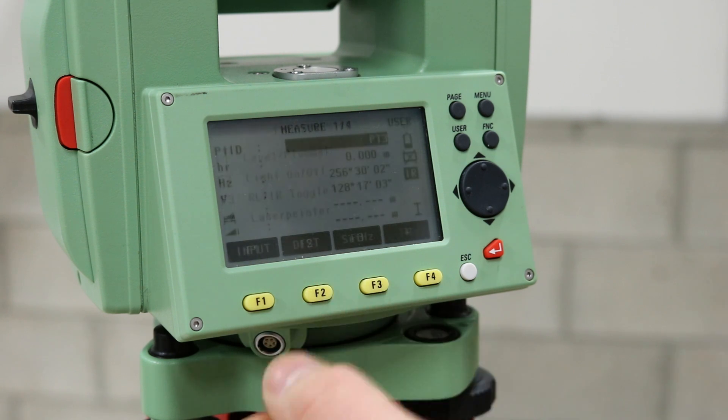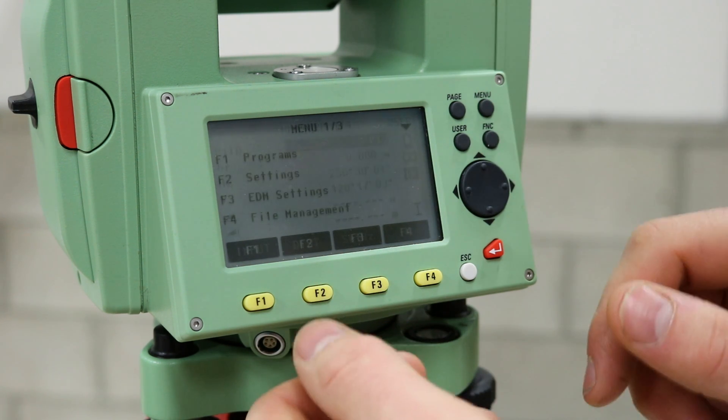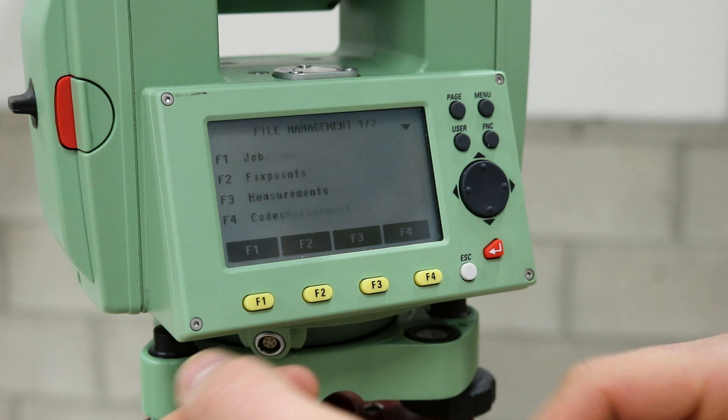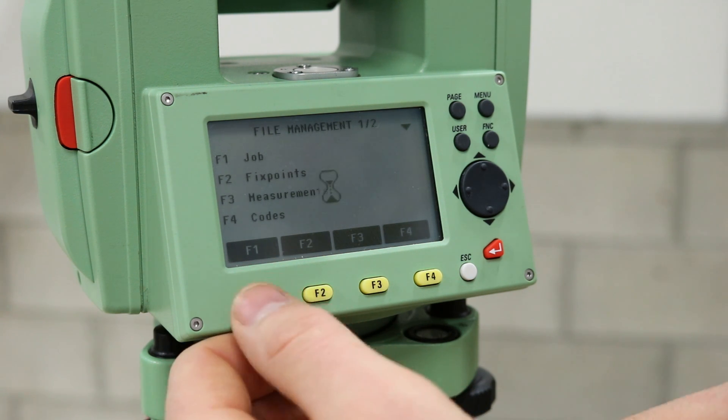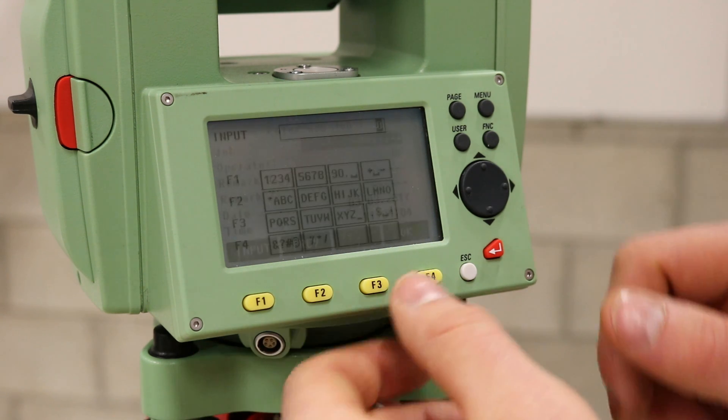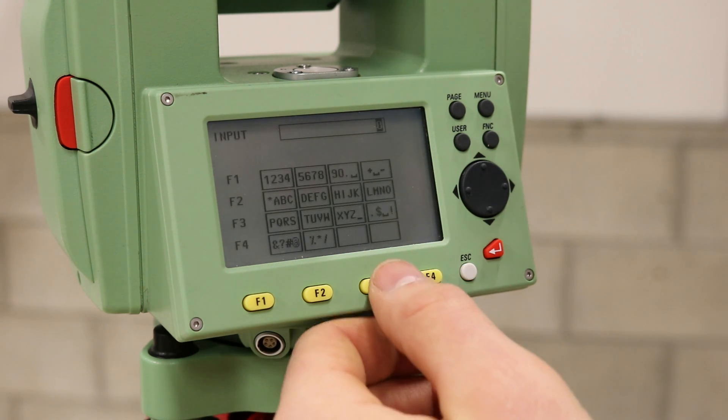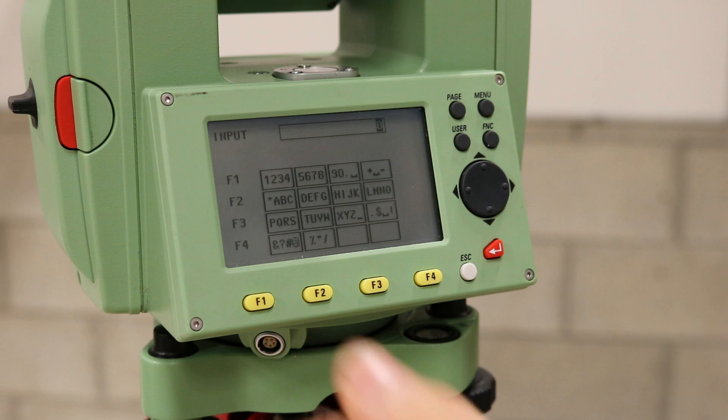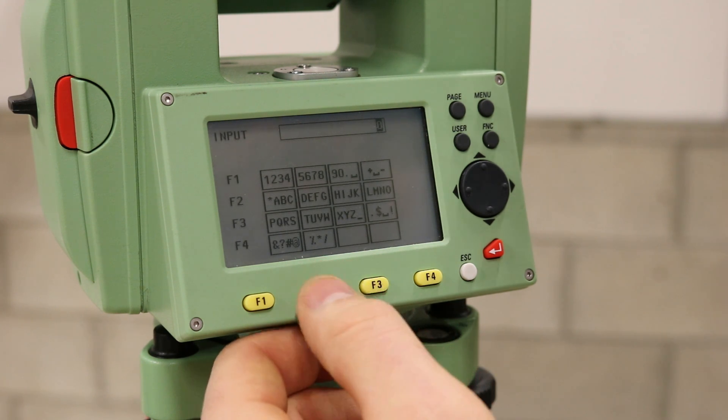Next, a new job file must be created. To do this, press the menu button and press the file management button. Press the job function that is in the following screen. For this example, I will be creating a new job, but you may choose an existing job if it is a suitable option.